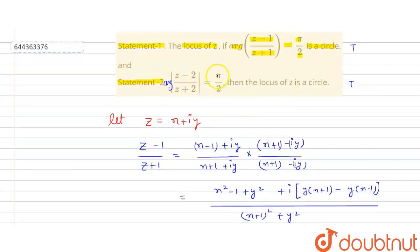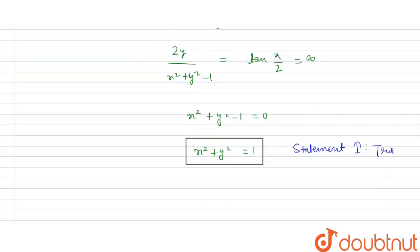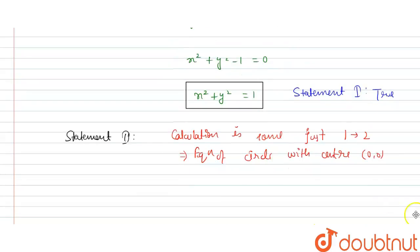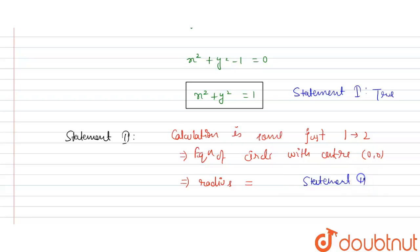Statement 2 and Statement 1 are essentially the same, but the number changes — here it is 2 instead of 1. So if Statement 1 gives a circle, Statement 2 also gives a circle with radius 2. The calculation is the same; just in place of 1, here it is written as 2. This is also an equation of a circle with center (0, 0) and radius equal to 2. That's why Statement 2 is also true, just like Statement 1.